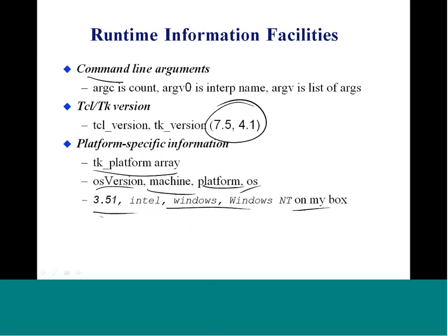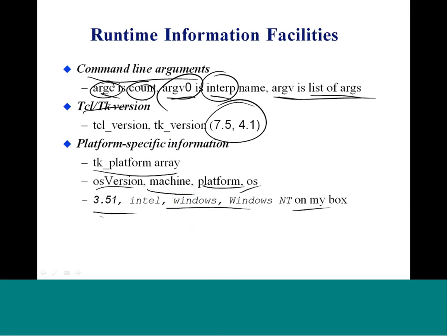There are also runtime information facilities. For example, argc is the argument count, argv0 is the interpreter name, and argv is the list of arguments. Querying argc gives you the count, the first argv is the interpreter name, and the remaining entries are the list of arguments. You can also query the Tcl and TK version; the commands are tcl_version and tk_version, which print out numbers like 7.5 and 4.1 respectively.